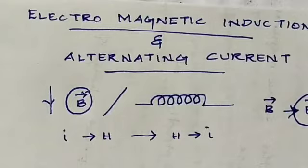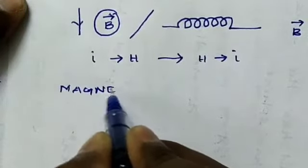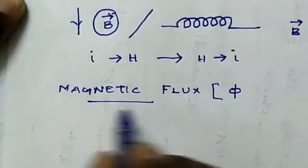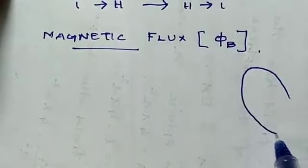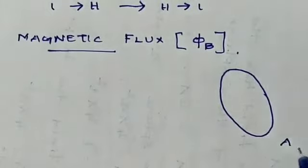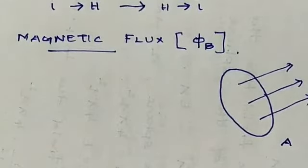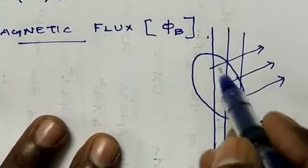Now, moving to electromagnetic induction, first we must know about magnetic flux. Magnetic flux is denoted by the symbol Phi (Φ_B), represented as B. The magnetic field lines pass through an area normally, and the direction of the magnetic field lines passing through that surface area is considered. The surface through which lines pass is called the area.